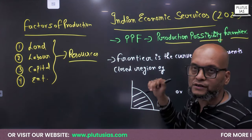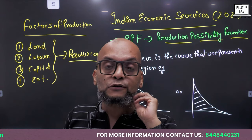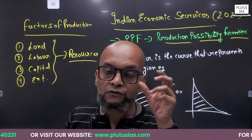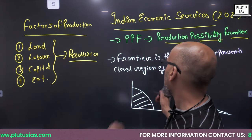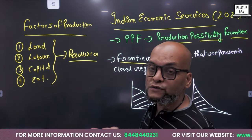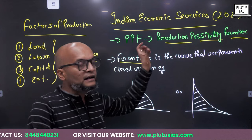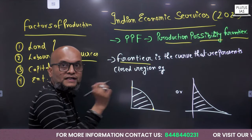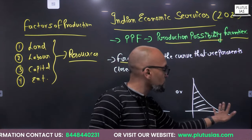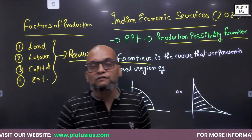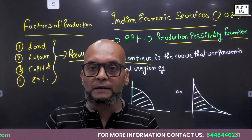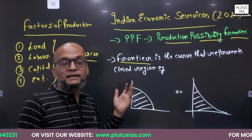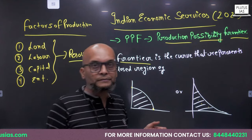PPF is production possibility frontier. Since we assume that there are two goods being produced in an economy, this curve is going to tell us that if we are producing a certain quantity of one good, then how much quantity of another good can be produced. Now, what do we mean by frontier? Frontier is the curve that represents a closed region. I have drawn a PPF here, so it is representing this enclosed region inside it. The region enclosed inside this curve will be referred to as the frontier. So the name itself is suggesting: production possibility frontier is a curve that tells us the different possibilities of production.